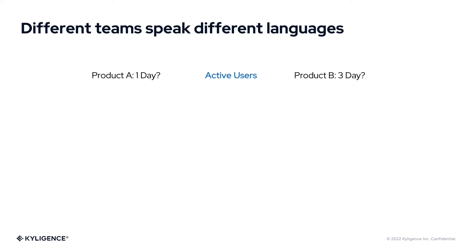Things like this happen almost every day in our work, especially when we do data analytics in a large organization, where people in different teams tend to speak different languages. For example, 'active users' is a very common measure we use to track the popularity of our products. However, the understanding of this term could be different. For teams whose product is used quite frequently, they normally define active users as users who use the product every day. While for other products not used that frequently — like car rental or real estate products — nobody buys houses every day.